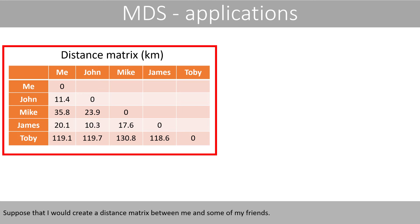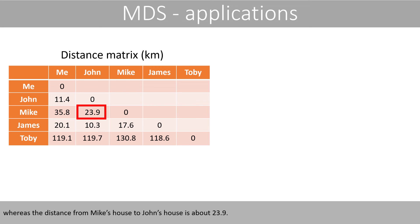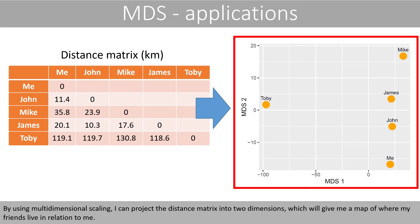Suppose that I would create a distance matrix between me and some of my friends. For example, the shortest way from my house to Mike's house is about 31.8 kilometers, whereas the distance from Mike's house to John's house is about 23.9. By using multidimensional scaling, I can project the distance matrix into two dimensions, which will give me a map of where my friends live in relation to me.